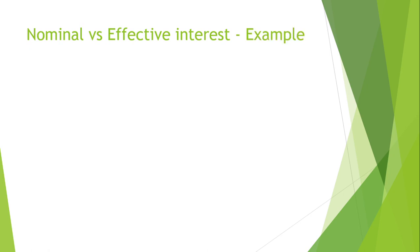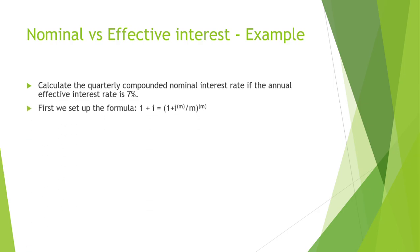Now, let's look at a simple example. You need to calculate the quarterly compounded nominal interest rate if the annual effective interest rate is 7%. So, first off, we need to set up the formula. This formula can be used for any of the nominal versus effective interest rate calculations. So, basically, we need to solve im. Since we want a quarterly rate, we know that m equals 4. Therefore, we have 1 plus the 7% equals 1 plus i4 divided by 4 to the power of 4. This is due to it being quarterly.